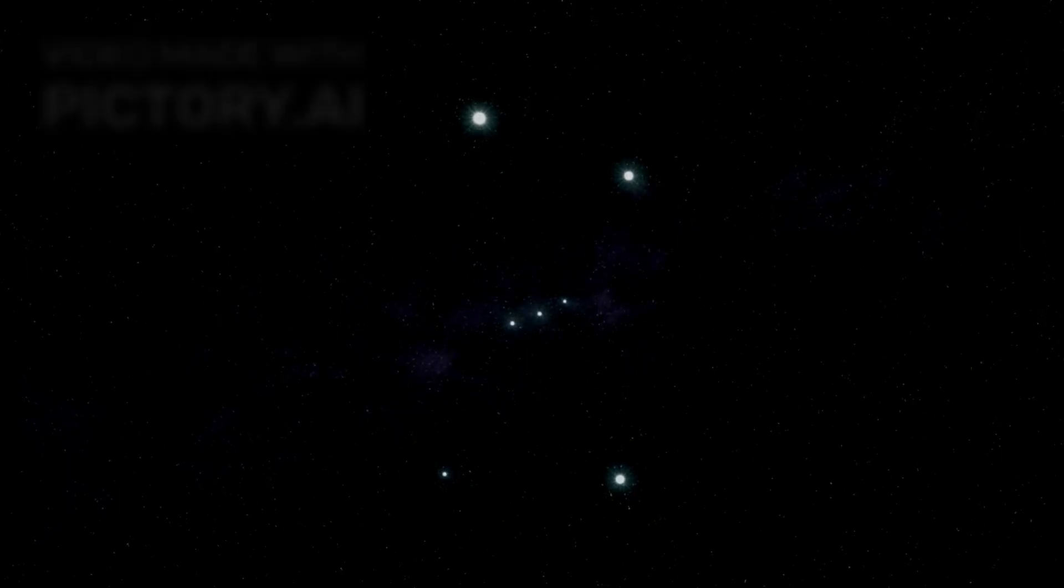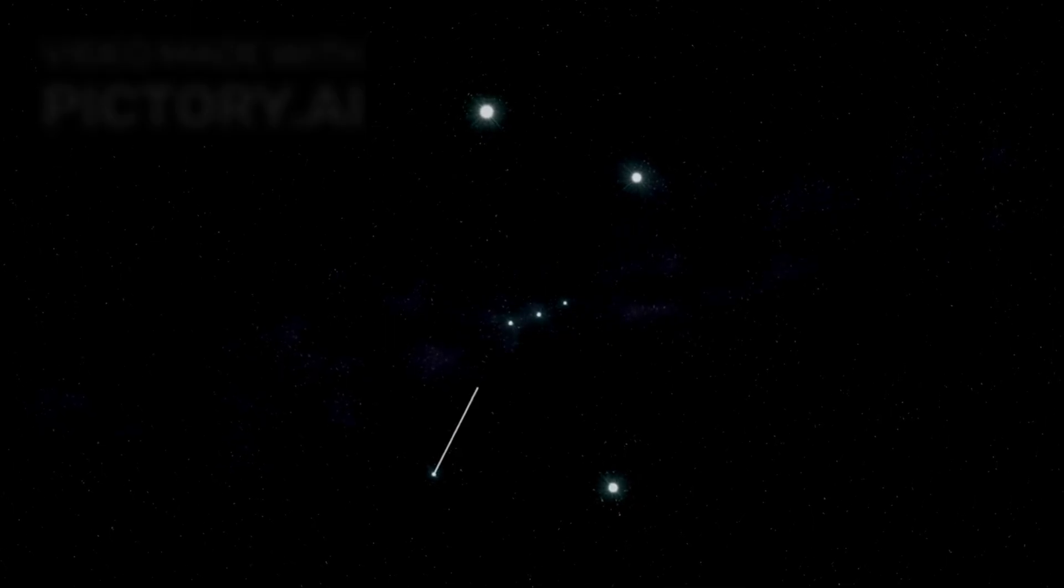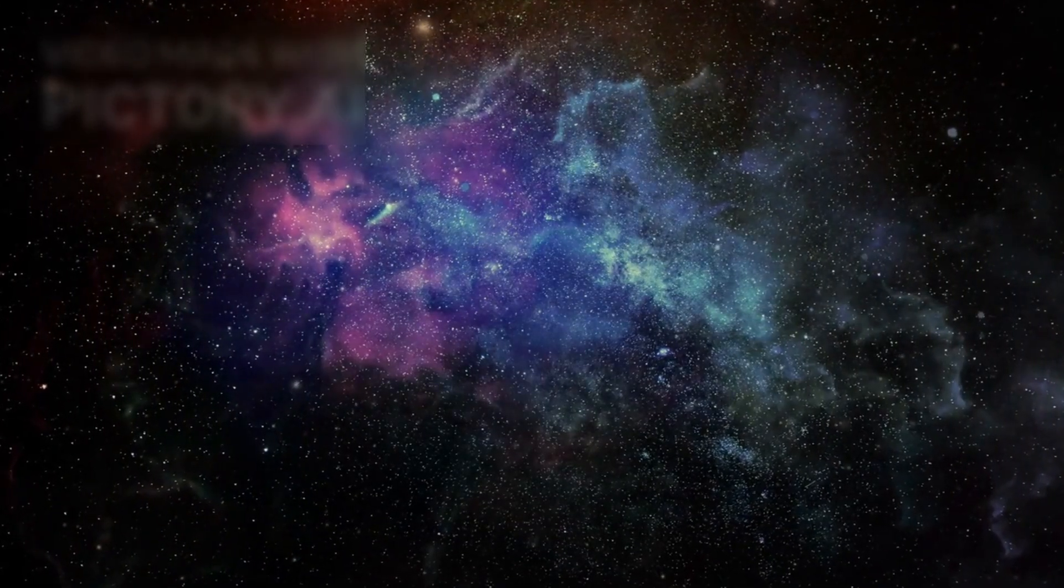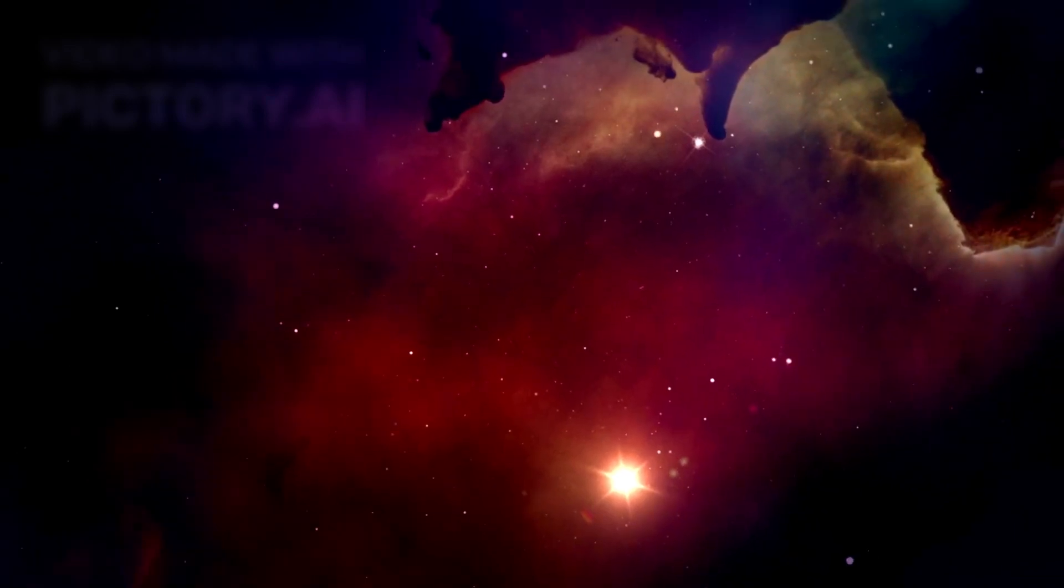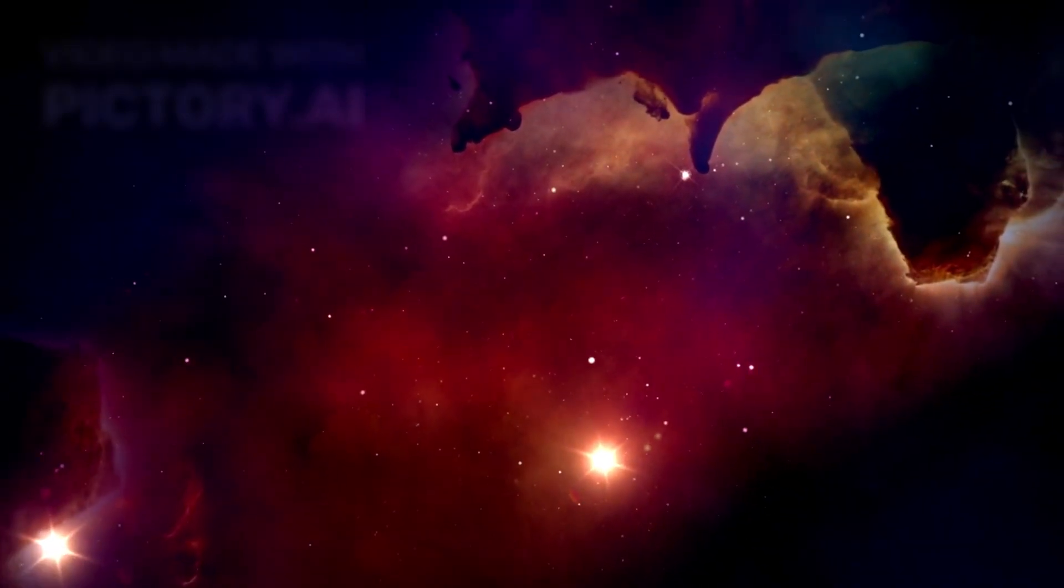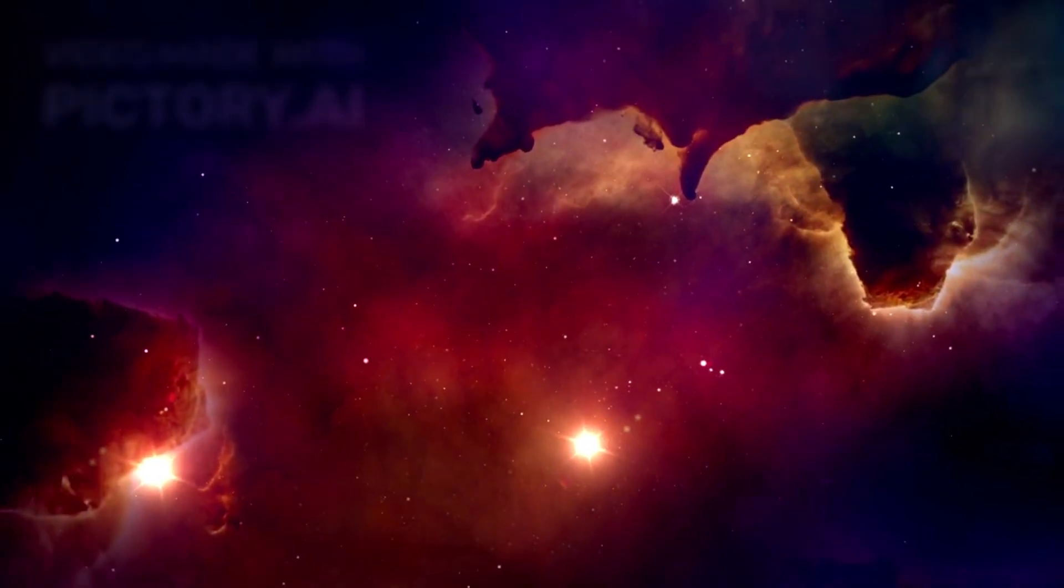Betelgeuse, also called Alpha Orionis, is a red supergiant, the second brightest star in the Orion constellation after Rigel. Despite being outshined, Betelgeuse captures attention for its color, size, and volatility.